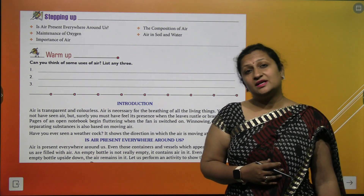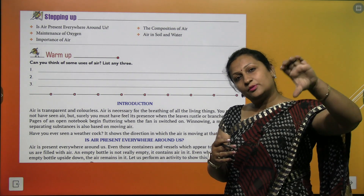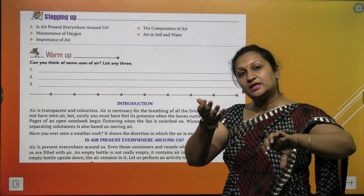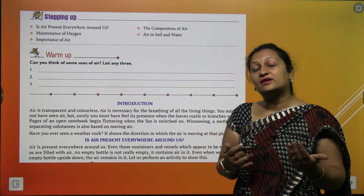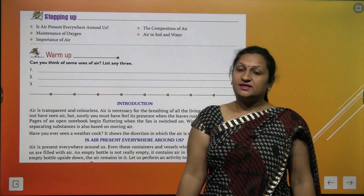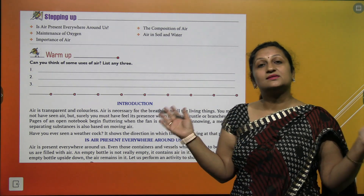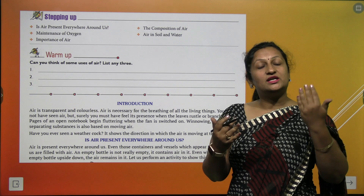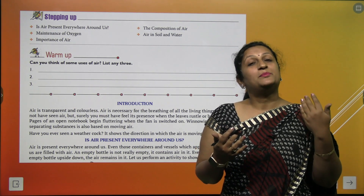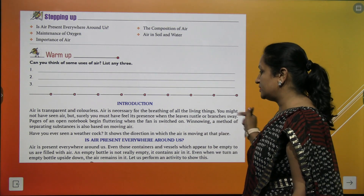Hum air ka presence feel kar sakte hain by the rustling sound of the leaves. Paani ke andar agar aap koi tumbler daalenge, to aapko awaaz aati hai — bubbles ke rise up hone ki. So this is the sound of air. Is air present everywhere around us? Yes, air is present everywhere. Agar wind chal raha hota hai, to you can easily feel which direction the wind is flowing from. Aapki body pe pressure feel hota hai.